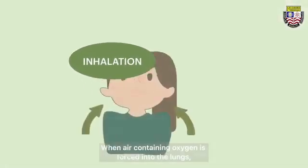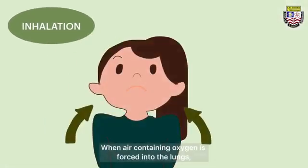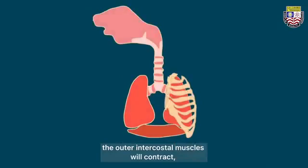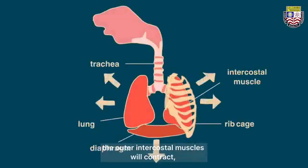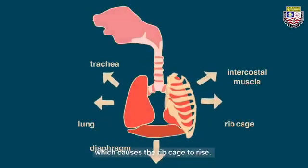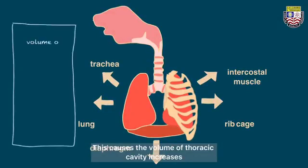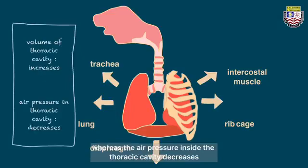When air containing oxygen is forced into the lungs, the outer intercostal muscles will contract, which causes the rib cage to rise. The diaphragm contracts and flattens out. This causes the volume of the thoracic cavity to increase, whereas the air pressure inside the thoracic cavity decreases.